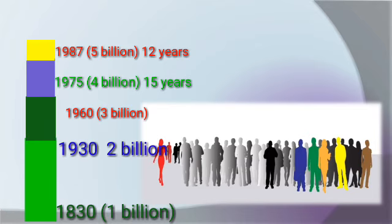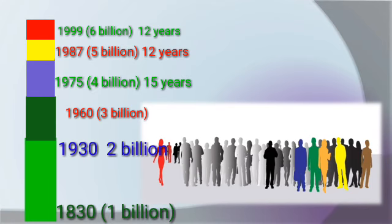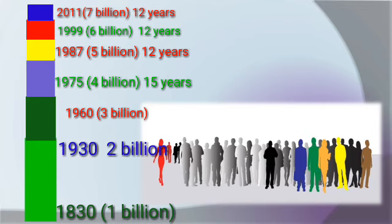In 1987 we reached 6 billion population, which took 12 years. Then in 2011 our population reached 7 billion, and this too took about 12 years. So you can see that the time needed to add each billion has been decreasing.